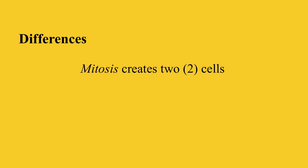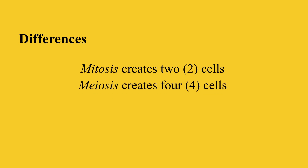Moreover, mitosis results in the formation of two cells at the end of cell division, while meiosis results in the formation of four cells.